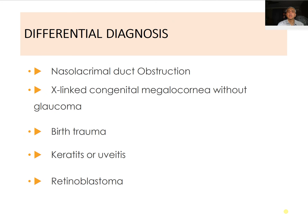The most common differential diagnosis in children is epiphora, which can be due to nasolacrimal duct obstruction. If parents present with a child with a watery eye, congenital glaucoma should be suspected, but if the watering is associated with discharge, it is most probably nasolacrimal duct obstruction — confirmed by a positive regurgitation test. Another important differential is congenital megalocornea, in which intraocular pressure is normal, there is no optic disc cupping, and no Haab's striae, but corneal diameter is large.